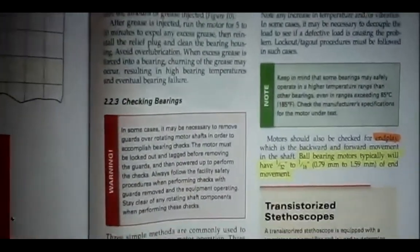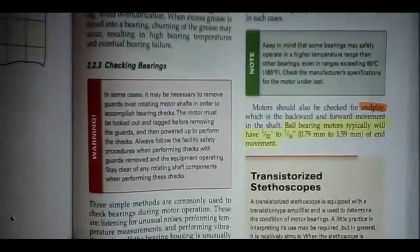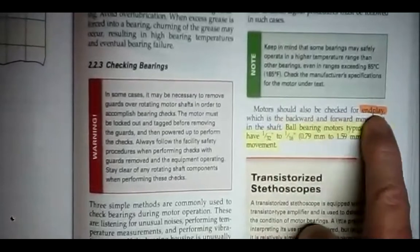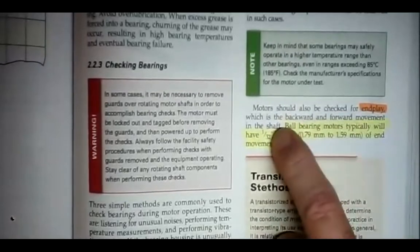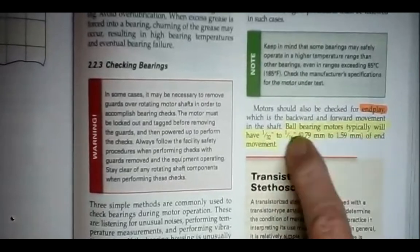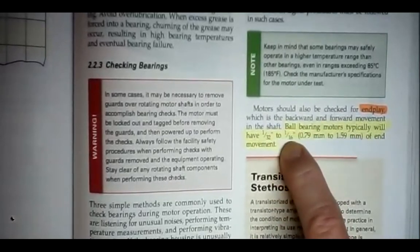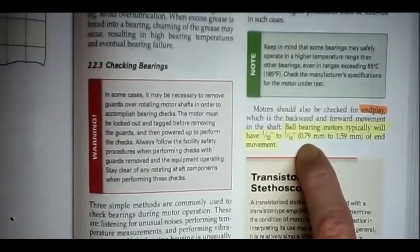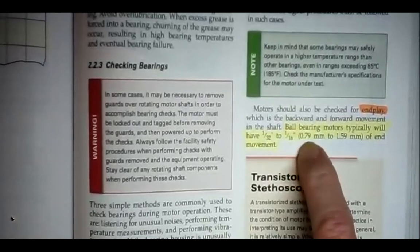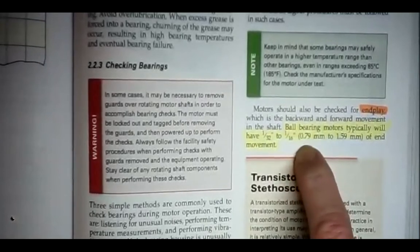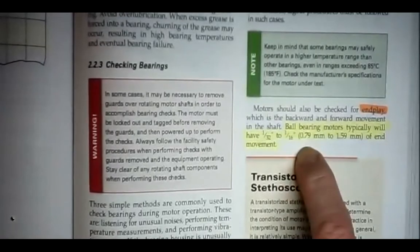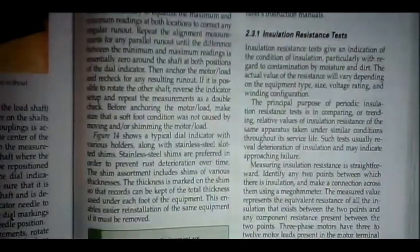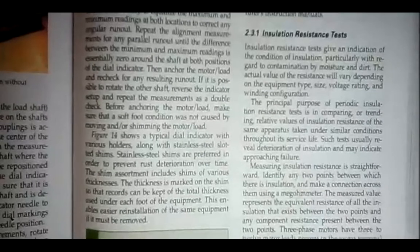On page 13, on the right-hand column, they're talking about end play. Motors should also be checked for end play, which is the backward and forward movement in the shaft. Ball bearing motors typically will have a 32nd to a 16th of an inch of end movement. In other words, if you grabbed the shaft of the motor, you could physically move it in and out, a 32nd to a 16th of an inch, it'll move. That end play is not a bad thing. Don't think of it as being harmful to the motor. It has a little bit of end play, and that's a good thing.